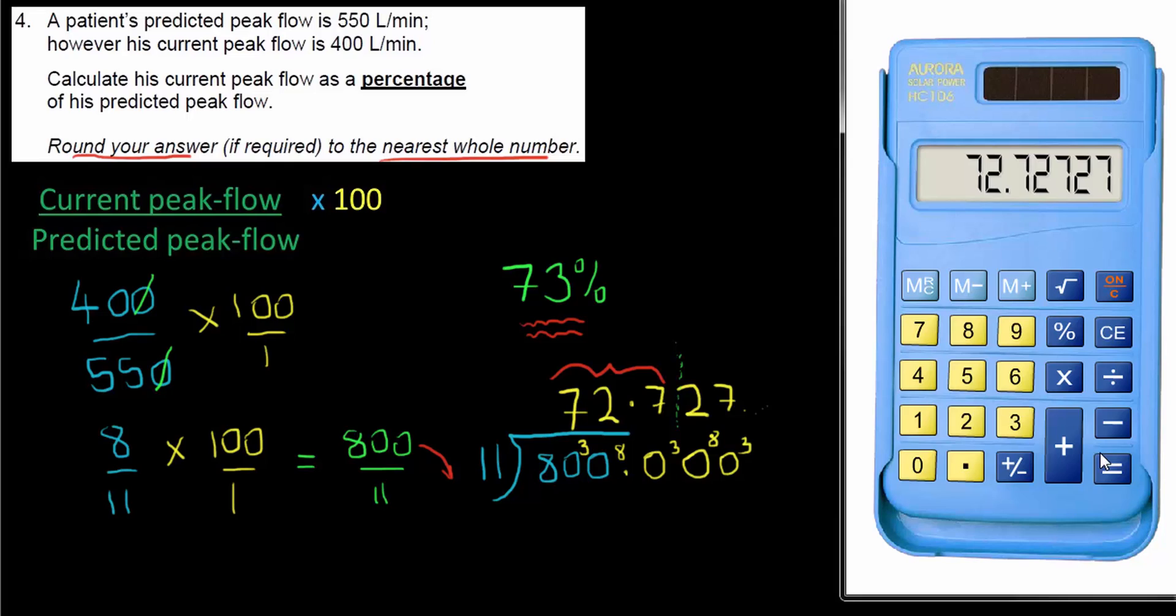Be that as it may, hopefully you'll realize that with a calculator, this is a very straightforward question to do. You just put in the current peak flow value, divide it by the predicted peak flow value, and multiply it by 100. Very important to get those numbers the right way around. The current peak flow has got to be put in first. And rather sneakily, they've actually given us the predicted peak flow first, and the current peak flow second. So we do have to have our wits about us. Well, that's it for me. Thanks for watching.